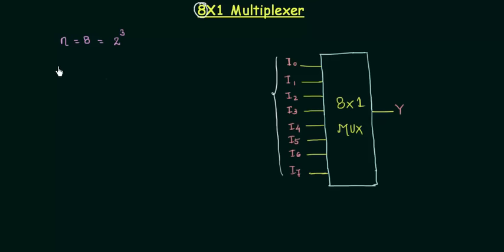Now you already know m is the select line or the selector variable and it is equal to log having base 2 n. I will replace this n by 2 having power 3. So m is equal to log having base 2 then 2 to the power 3 and it is equal to 3.